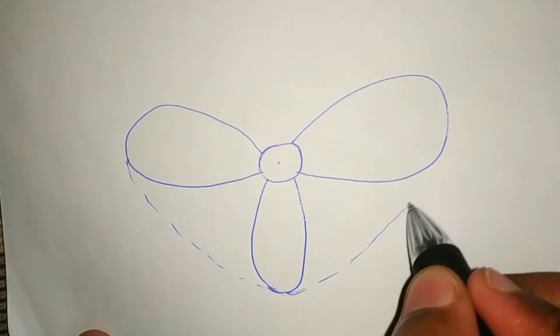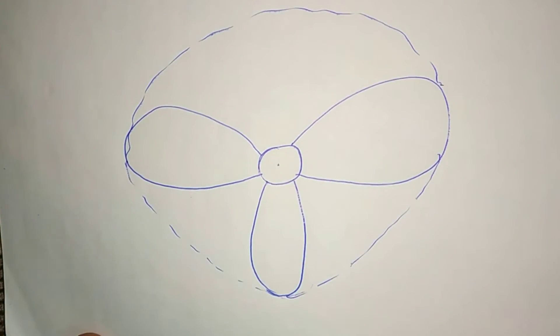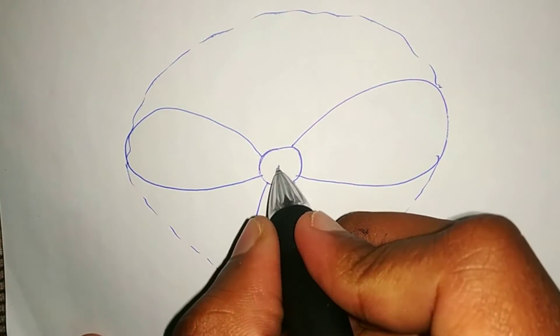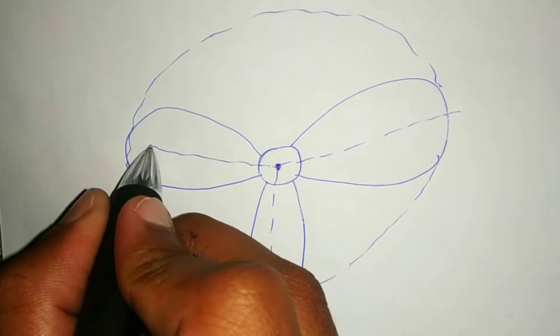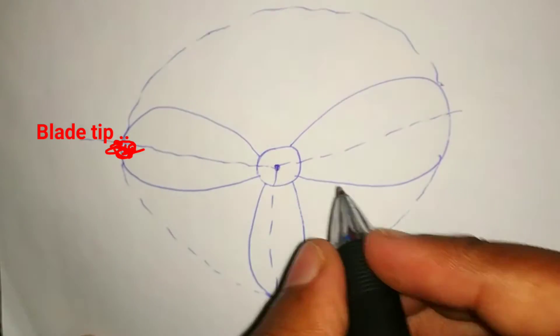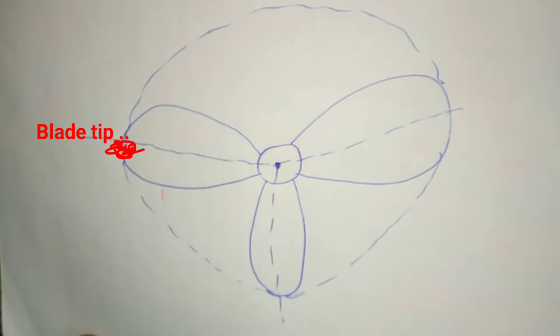Now we will look at the important definitions related to the propeller. First is the blade tip. The maximum reach of the blade from the center of the hub which separates the leading and trailing edge is known as the blade tip.